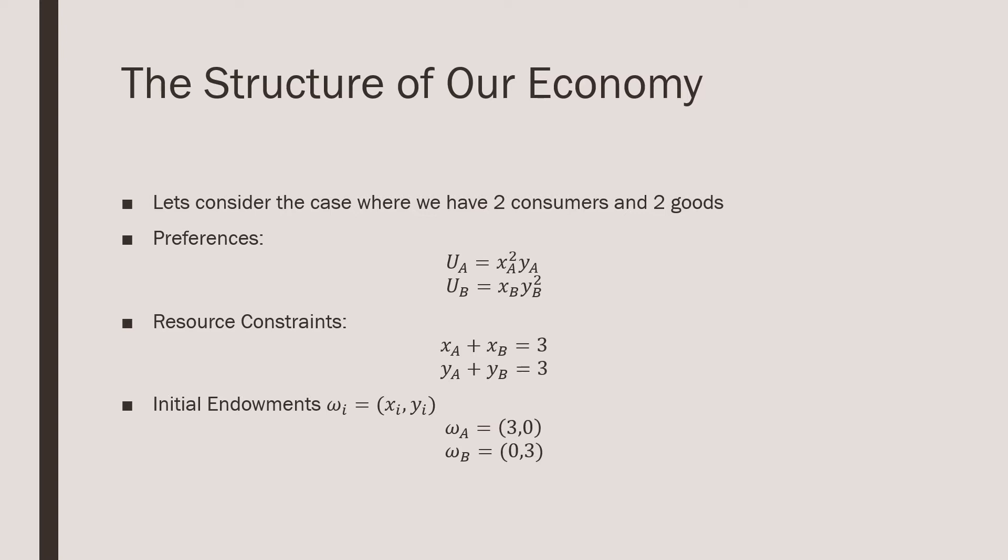Our resources, meaning the total size of our economy, is going to be 3. So XA and XB, meaning the consumption of good X for consumer A and consumer B, sums to 3. And the same thing for good Y. Our initial endowments are defined as follows, with consumer A having all the stock of X and consumer B having all the stock of Y. So let's see what is competitive equilibrium in this economy.